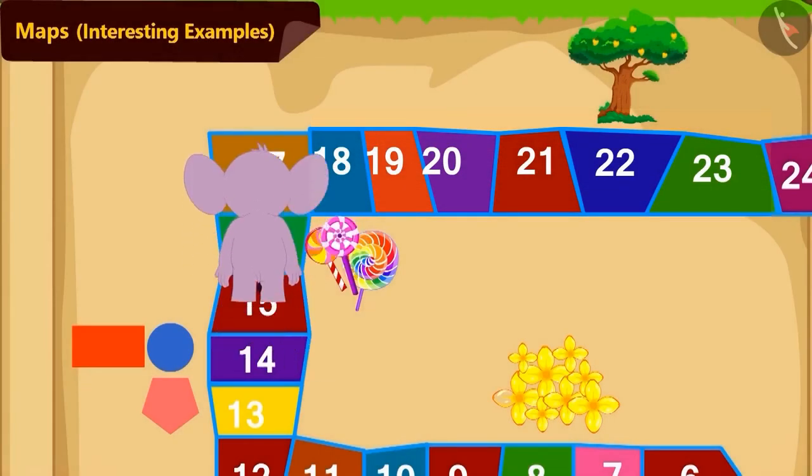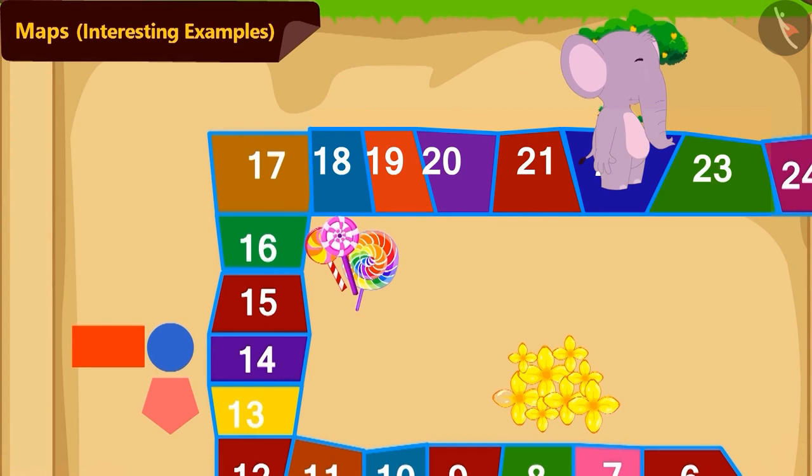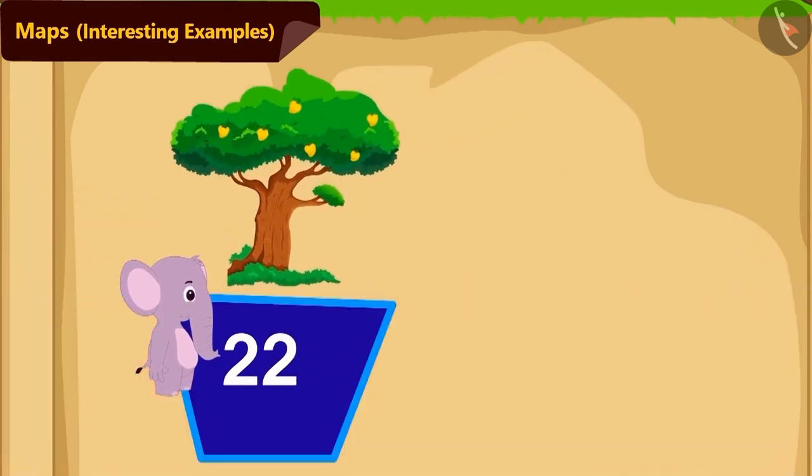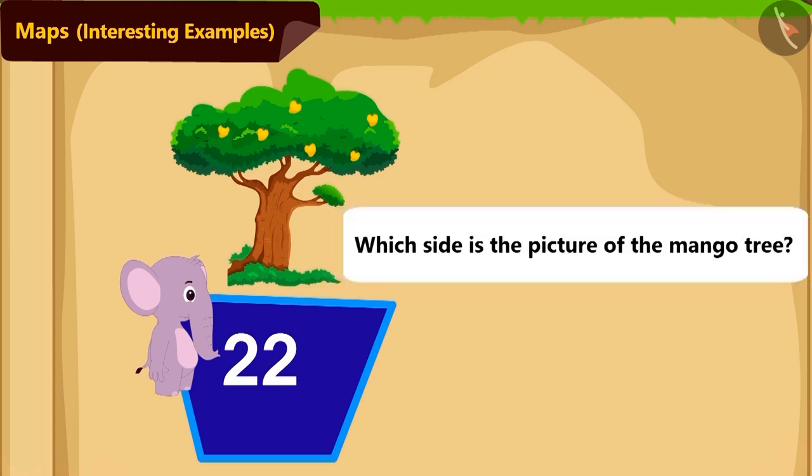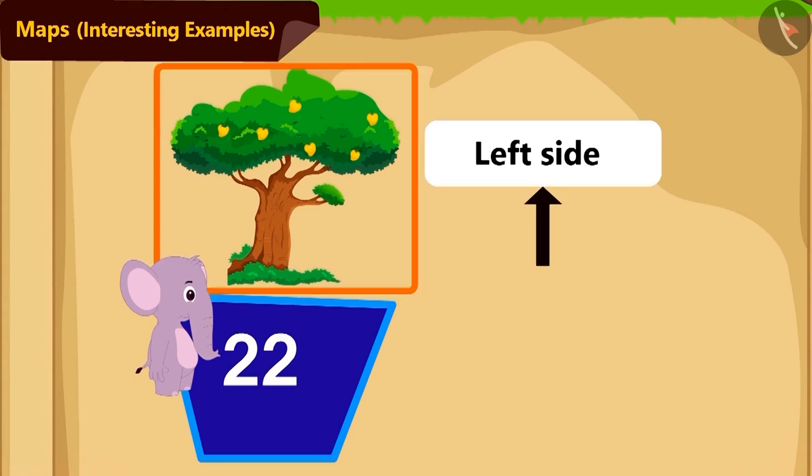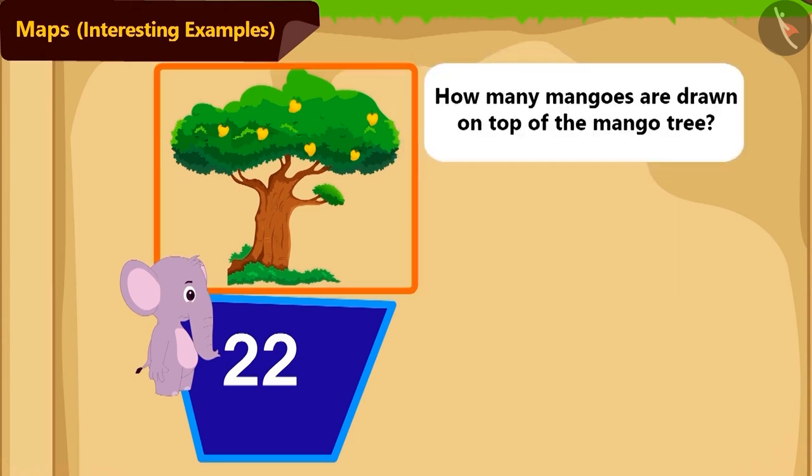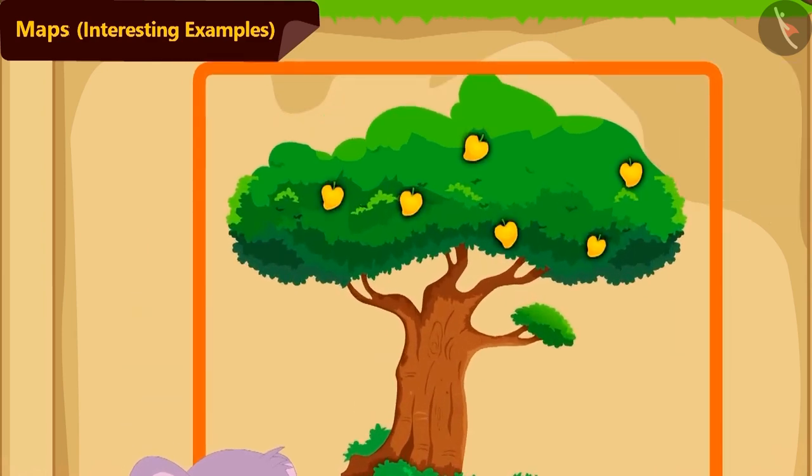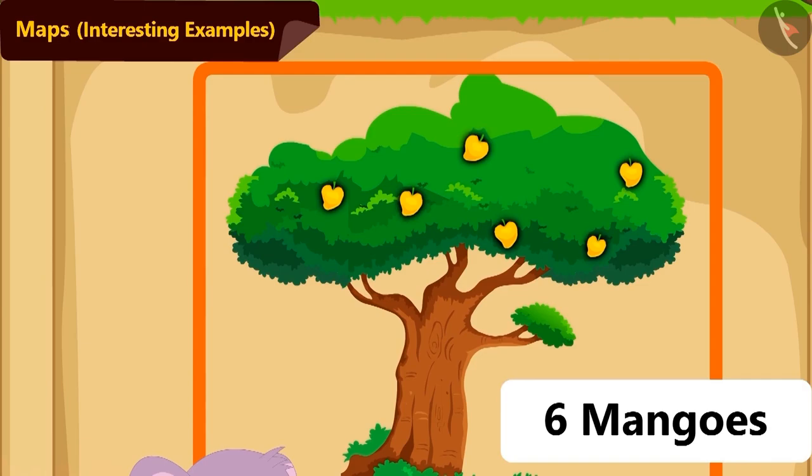With the help of you, Appu has quickly moved to tile number 22. Now, can you tell on which side of tile number 22 is the picture of a mango tree? Yes! The picture of a mango tree is to the left of tile number 22. And how many mangoes are painted on top of that mango tree? Absolutely right! 6 mangoes!